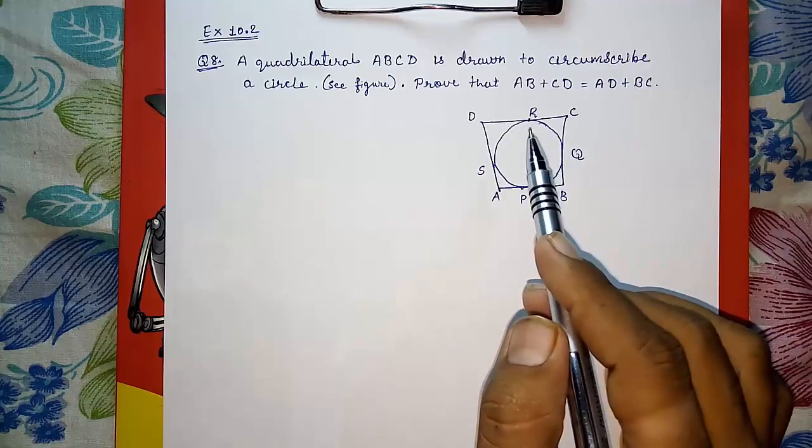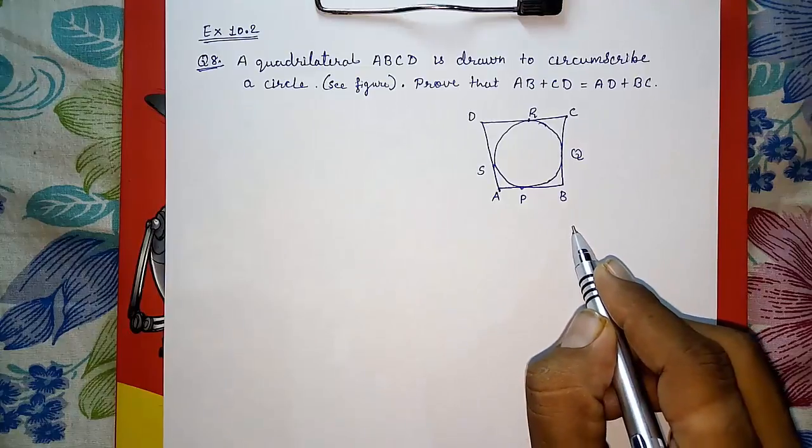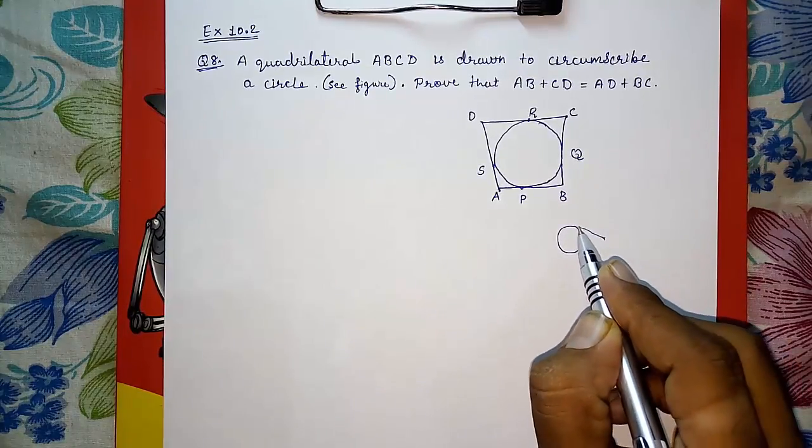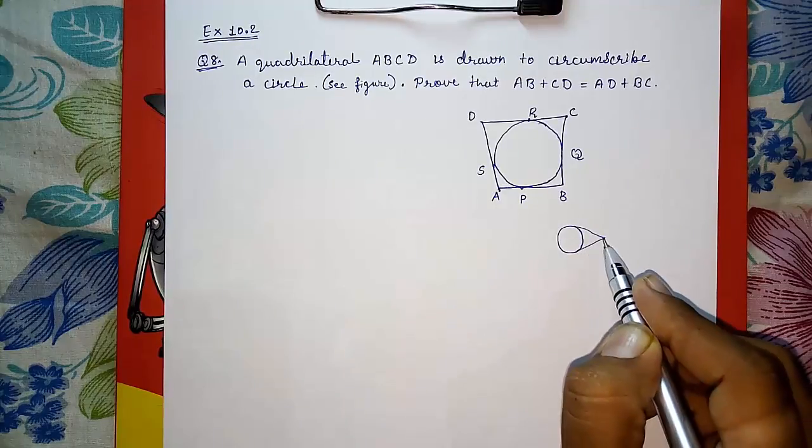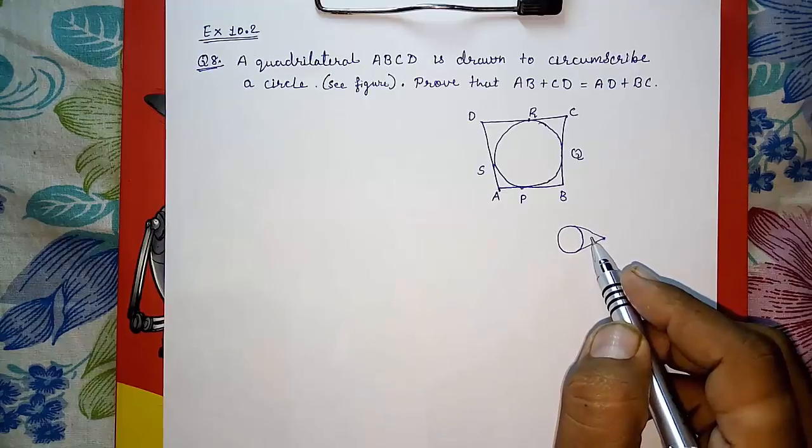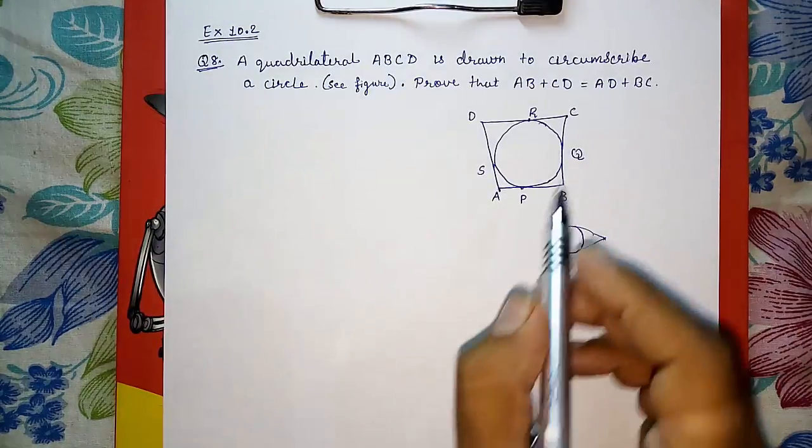For solving this, we have to go to theorem 10.2. In theorem 10.2 we learned that from an external point, if we are drawing two tangents, then those two tangents are equidistant. So here we are going to follow that.